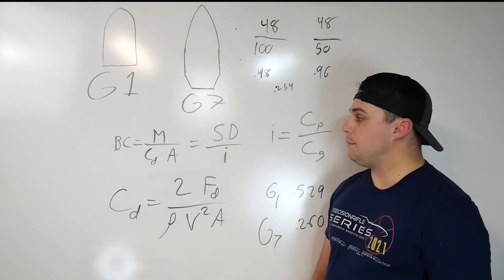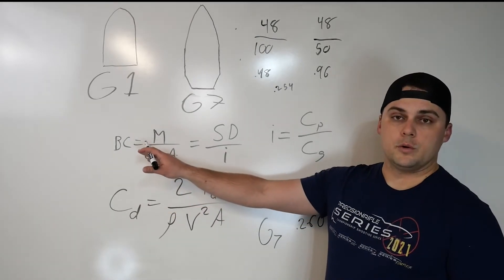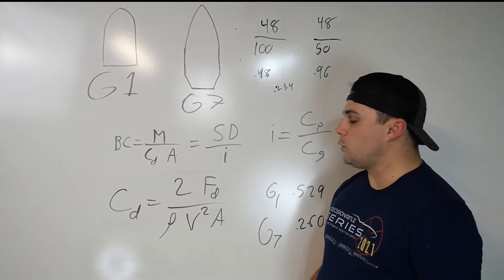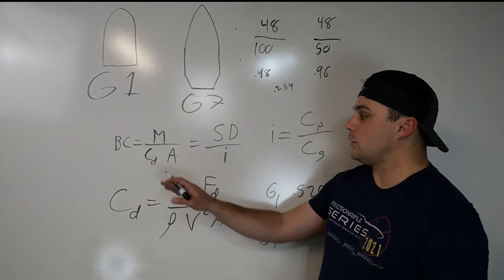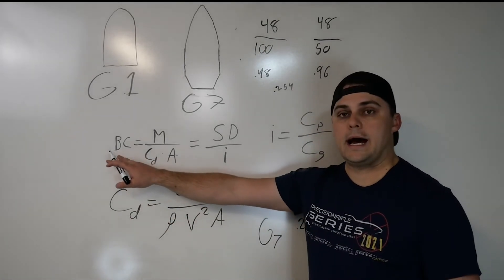Okay, so now let's tie that a little bit back into the ballistic coefficient equation we've got up here. So what you end up with is a smaller drag coefficient leads to a lower force of drag. A low drag coefficient leads to a higher BC.